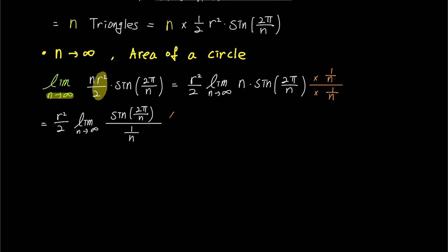Further, multiplying both the numerator and denominator by 2π gives us r squared over 2 times limit of 2π times sin 2π over n over 2π over n.